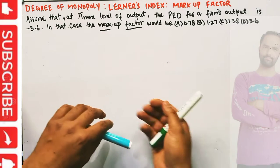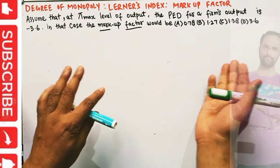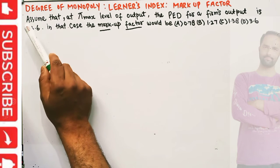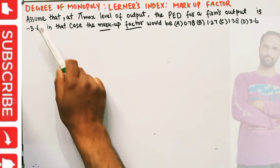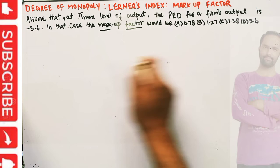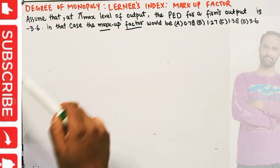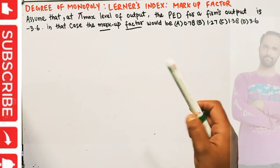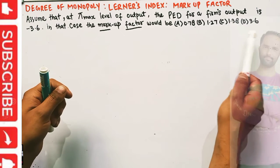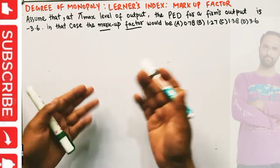In this video we will learn about the Lerner's Index, its derivation, and the derivation of the markup factor. We have a question asked by a brother: assume that at the profit-maximizing level of output, the price elasticity of demand for a firm's output is minus 3.6. The markup factor would be — options are 0.78, 1.27, 1.38, and 3.6.